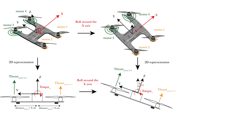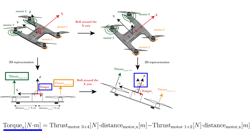First, we will redraw our quadcopter movement in a two-dimensional plane, perpendicular with the stationary x-axis. It is clear that a higher thrust from motors 3 and 4 compared to motors 2 and 1 will result in a torque around the x-axis in the clockwise direction, which eventually leads to a roll angle. The torque from motors 3 and 4 is given by multiplying the thrust of both with the distance of the motors to the center of the drone, which is 8 cm in our case. This torque will be counteracted by the torque from motors 1 and 2, meaning that you will have to subtract this value to get the total torque around the x-axis.